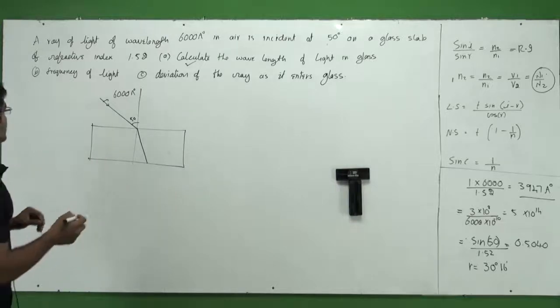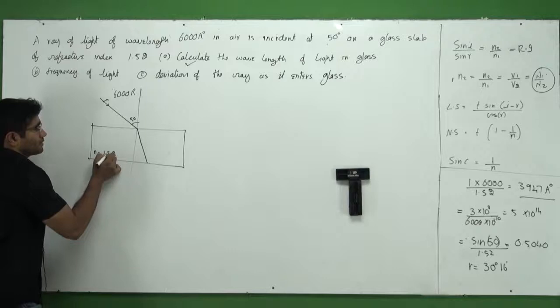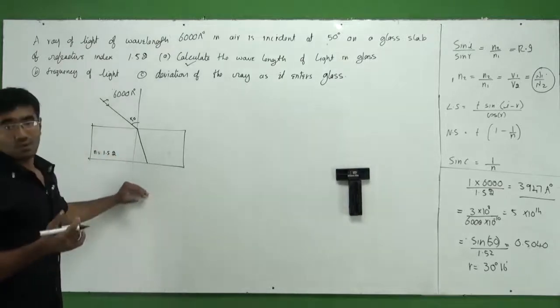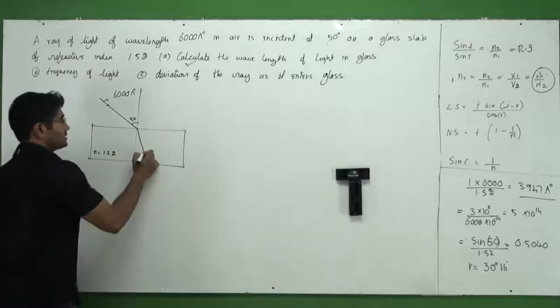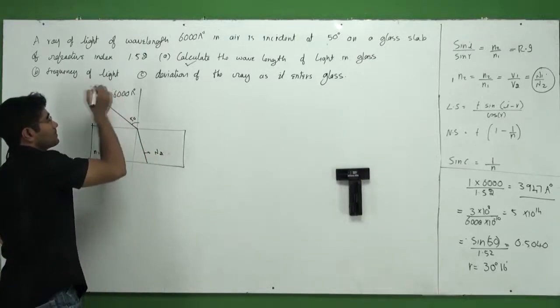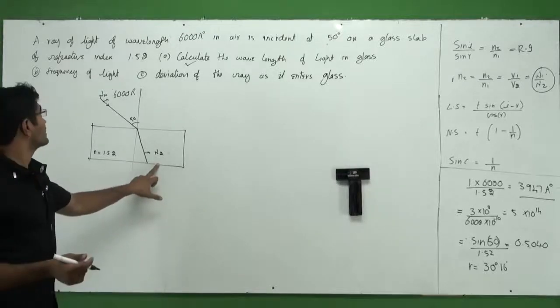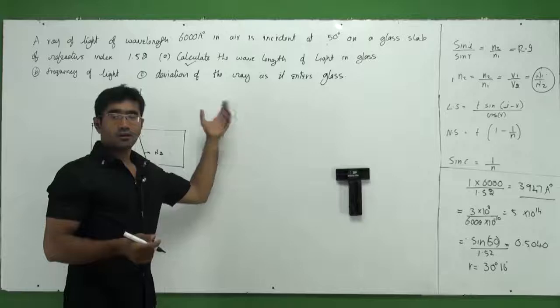The next thing is what? He says the refractive index of this medium is around 1.52 and that's what I have. The rest of it is the question. It means we need to calculate the wavelength of the light in the glass. It means what is lambda 2 here? So lambda 1 can be given as this. What is lambda 2? The second part of the question is finding the frequency and the last part is the deviation.